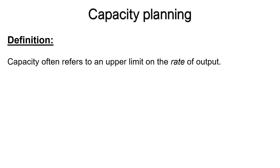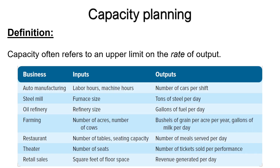Capacity often refers to an upper limit on the rate of output. Even though this seems simple enough, there are subtle difficulties in actually measuring capacity in certain cases. These difficulties arise because of different interpretations of the term capacity and problems with identifying suitable measures for a specific situation. No single measure of capacity will be appropriate in every situation; rather, the measure of capacity must be tailored to the situation.